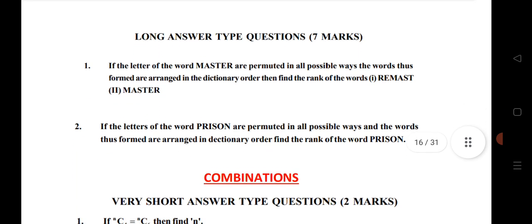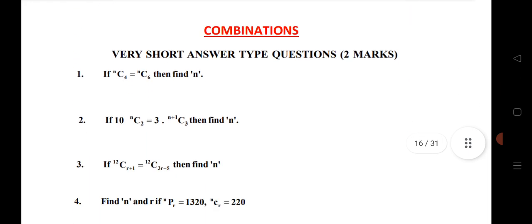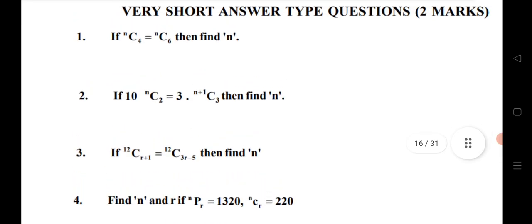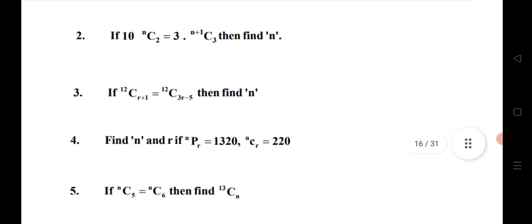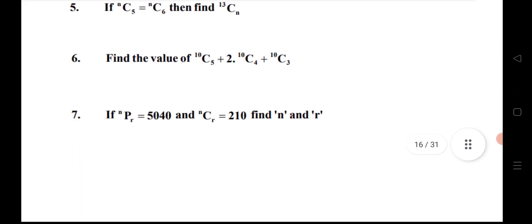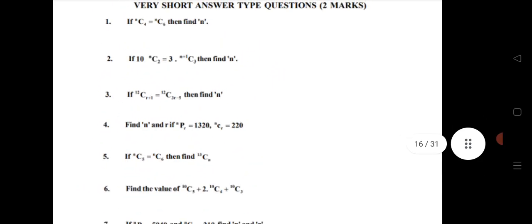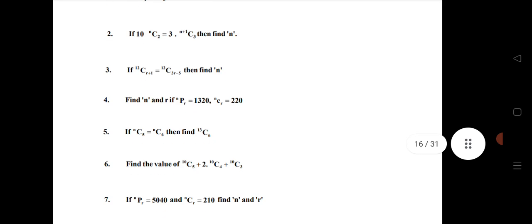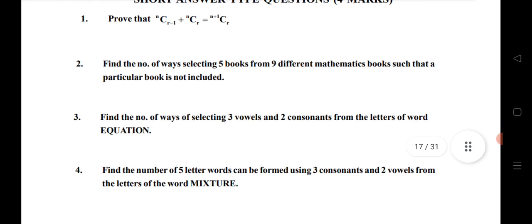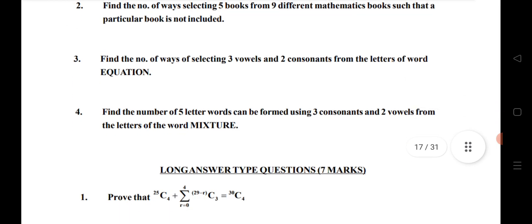One is master and rearranged; next is on prison. Let us see the combination — very important VSAQs given here. Five, six, seven questions — these are very helpful for you to practice. Very important questions that will definitely fetch good marks if you practice from this chapter. SAQ questions from combination: total four SAQs given here — very important SAQs.